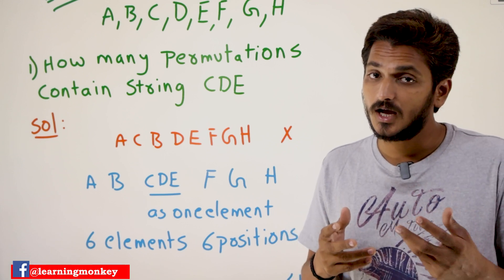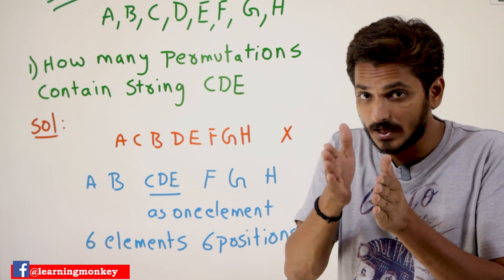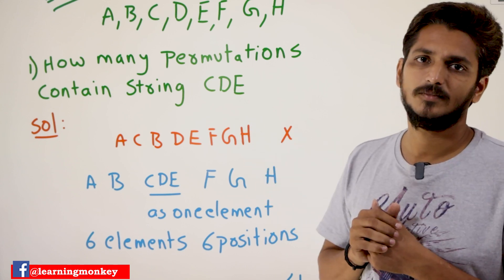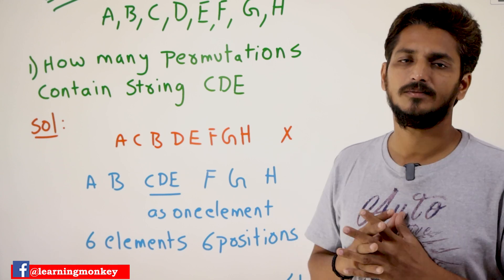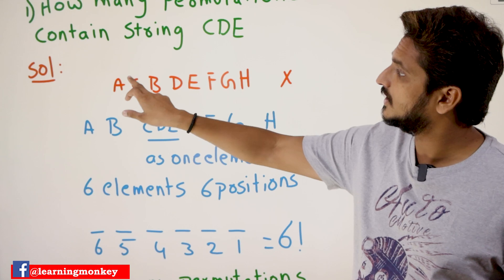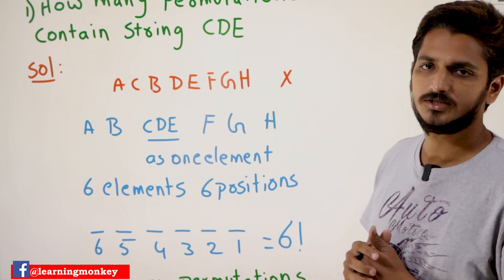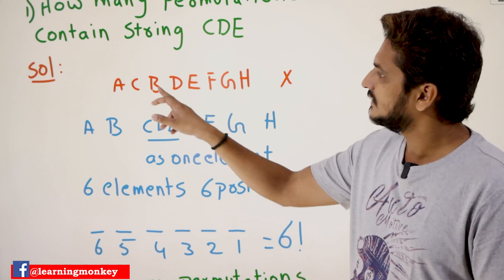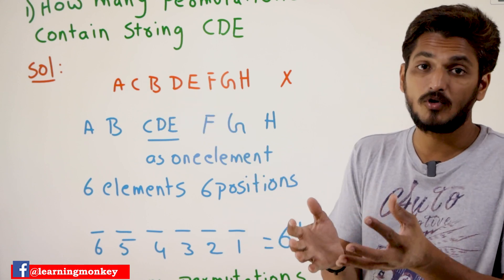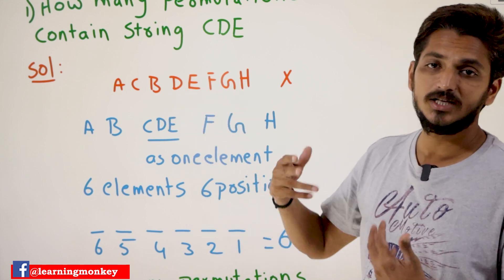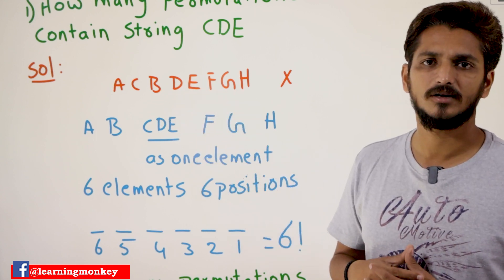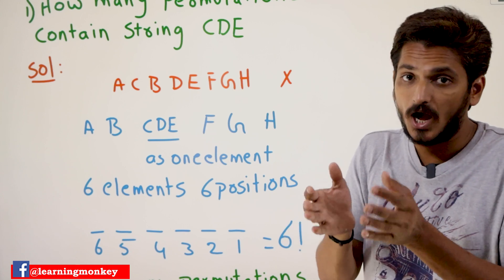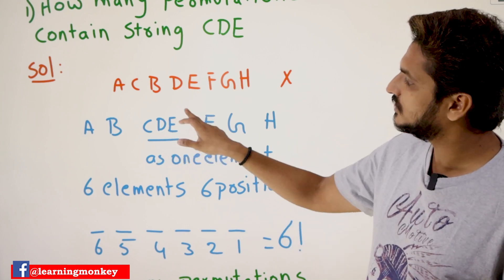They are asking that in your permutations, C, D, E should come together — then only it forms the string C, D, E. Those permutations should be considered. For example, can we consider the permutation A, C, B, D, E, F, G, H? No, we cannot consider this permutation. Why? Because C, D, E are not together — it is not forming the string C, D, E. So if you want the string C, D, E in your permutations, you have to combine them. C, D, E should be considered as a single element.